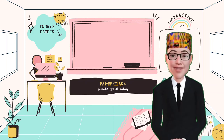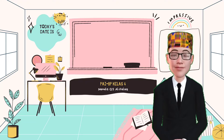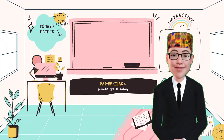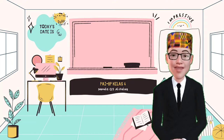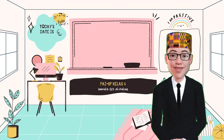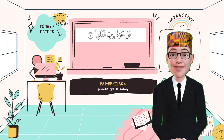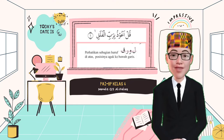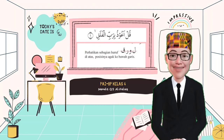Agar kita dapat menulis Quran Surat Al-Falak dengan benar, kita harus melakukan langkah-langkah sebagai berikut. Yang pertama, kita harus mencermati cara menulis penggalan Quran Surat Al-Falak, termasuk huruf-hurufnya. Misalnya di ayat 1: Qul a'udzubirobil falak. Kita perhatikan sebagian huruf-huruf seperti Lam, Wawu, Ra, dan Qaf.